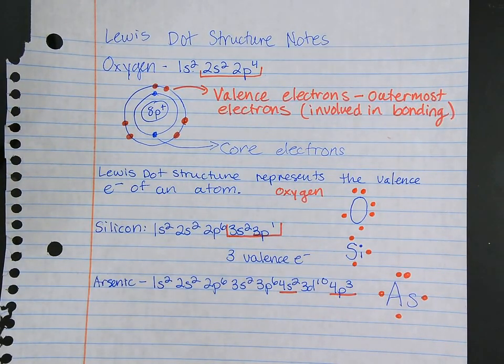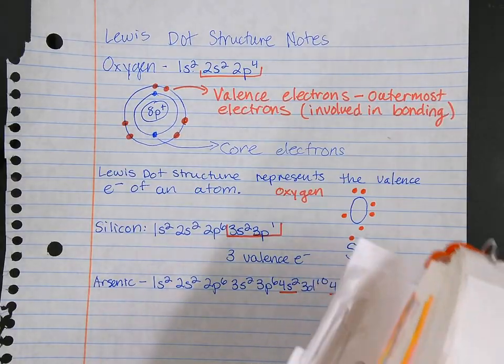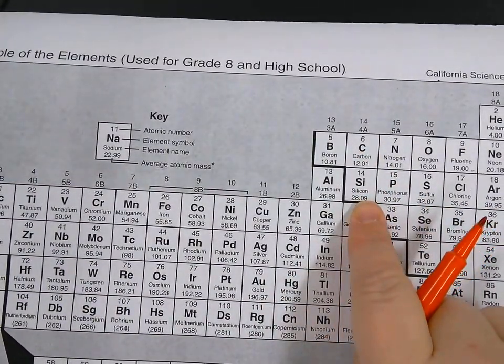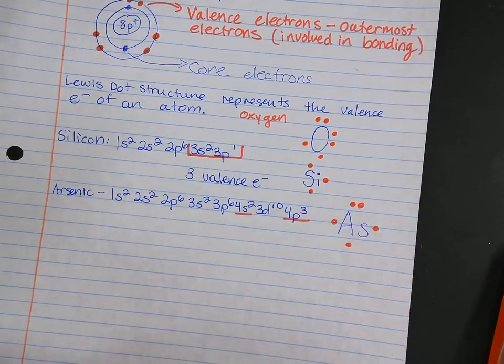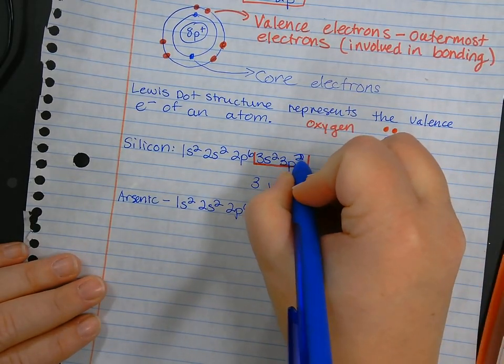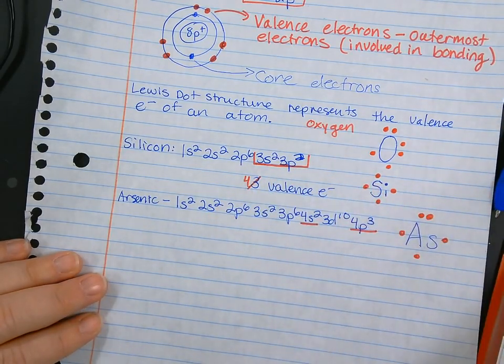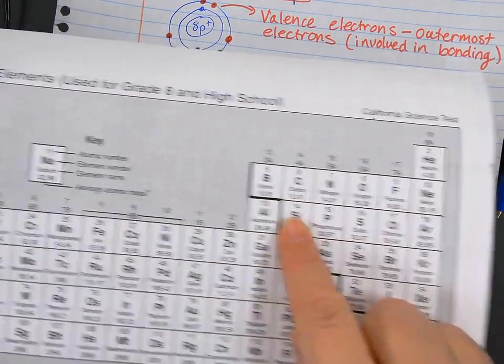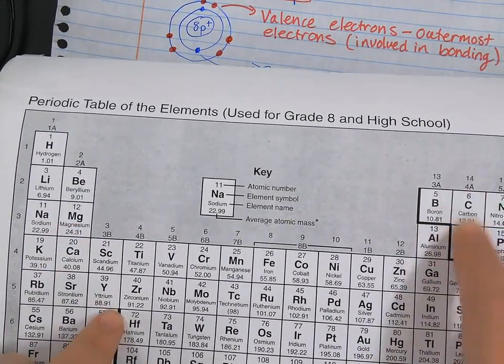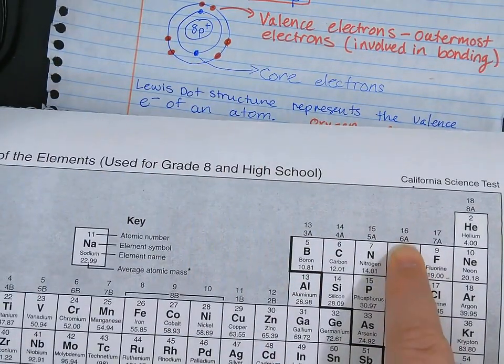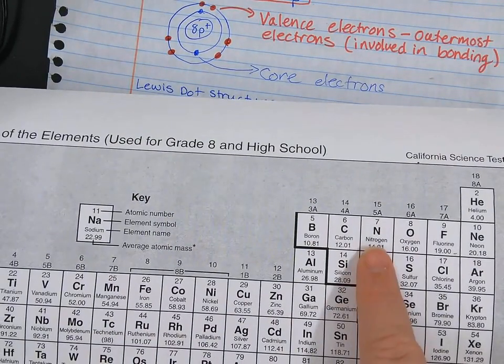Let's take a look at our periodic table and identify a few of these. We did silicon - silicon is here, it has those two s electrons and then the two p electrons, so it's in group 4 and has four valence electrons. We did oxygen, which had six valence electrons up here, and look, it's in group 6A. We did arsenic, and arsenic had five valence electrons, and arsenic is in group 5A.